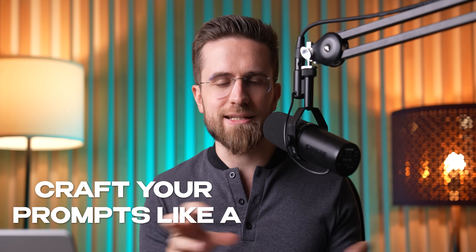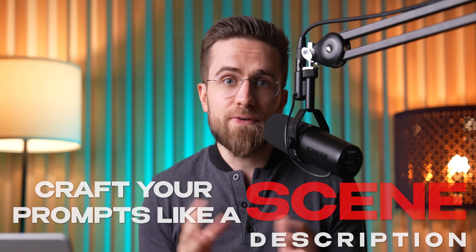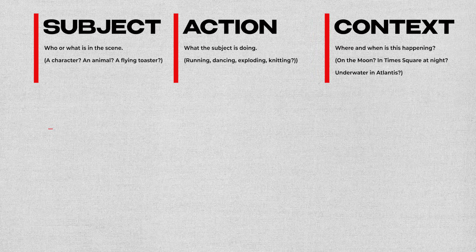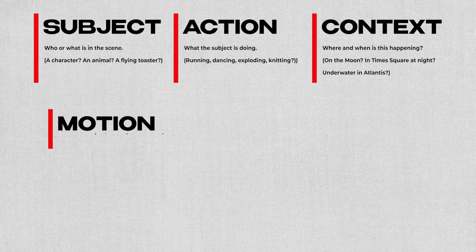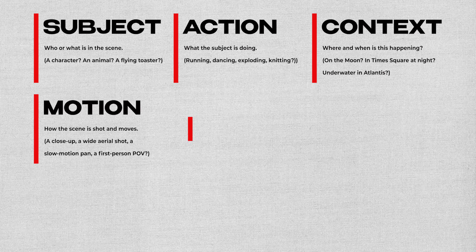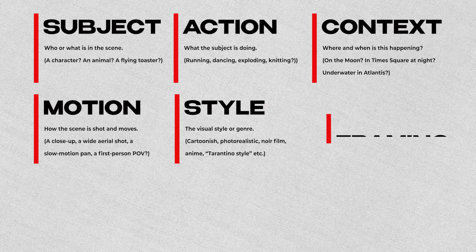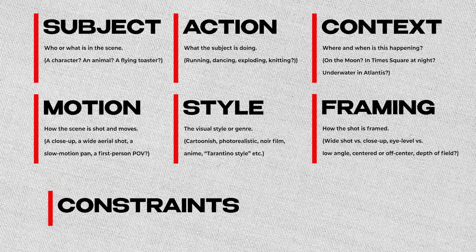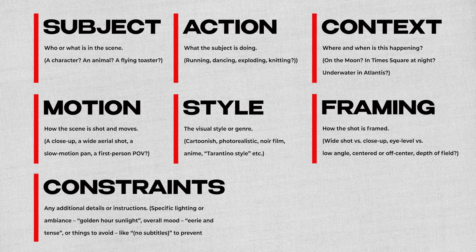To get the best results from VO3, you need to craft your prompts like a tiny movie scene description. I use a prompt formula — kind of a checklist — to make sure I cover all important aspects of the video. Here are the key elements I always try to include: Subject — who or what is in the scene. Action — what the subject is doing. Context — setting, where and when is this happening. Motion — camera and movement, how the scene is shot and moves. Style — the visual style or genre. Framing — composition, how the shot is framed. And constraints or extras — any additional details or instructions.